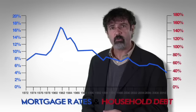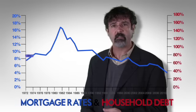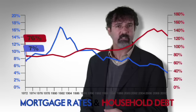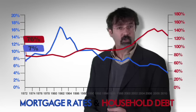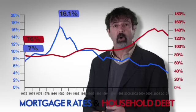In 1972, mortgage rates were 7% and the average American household's debt was 76% of its income. Mortgage interest rates rose until 1981 and then fell.